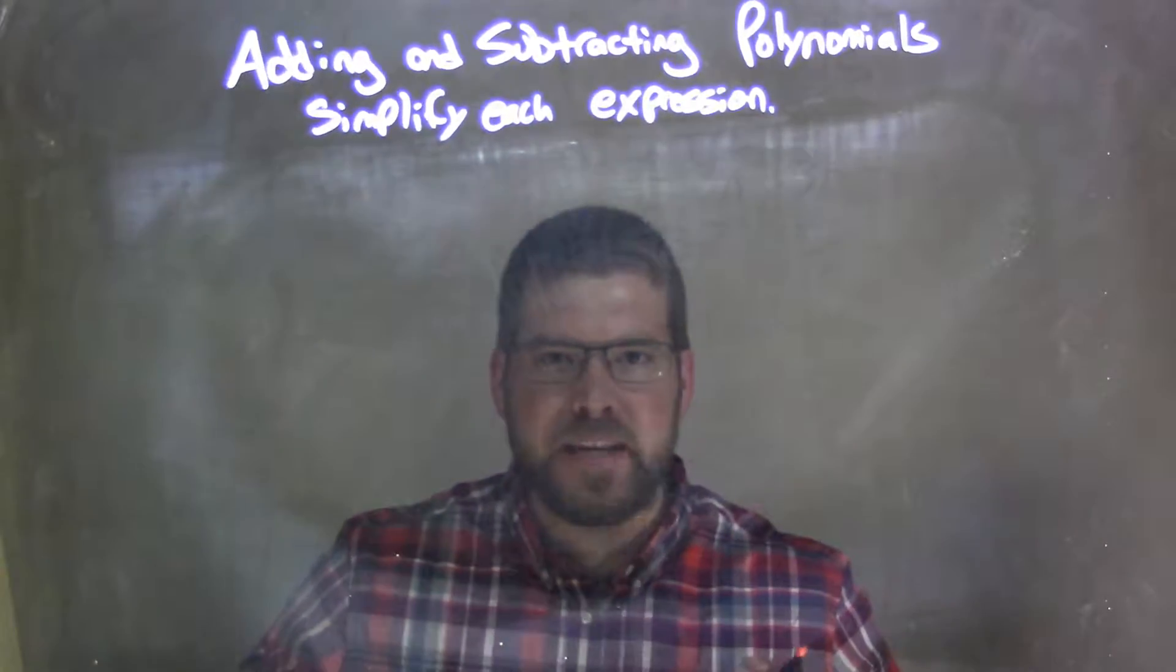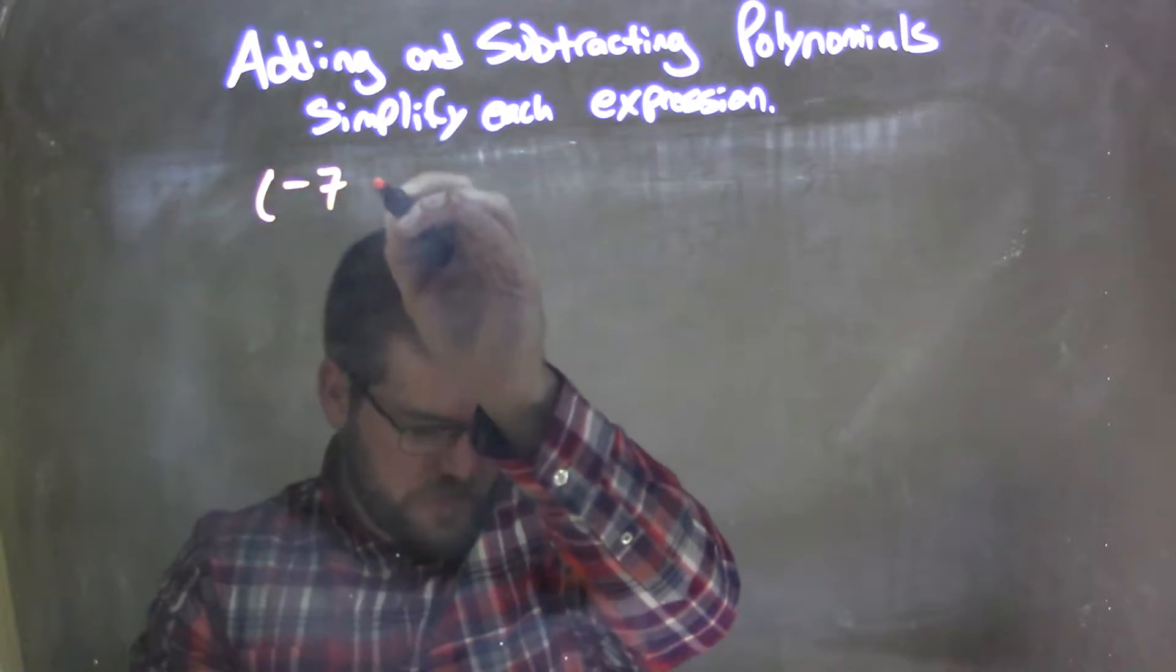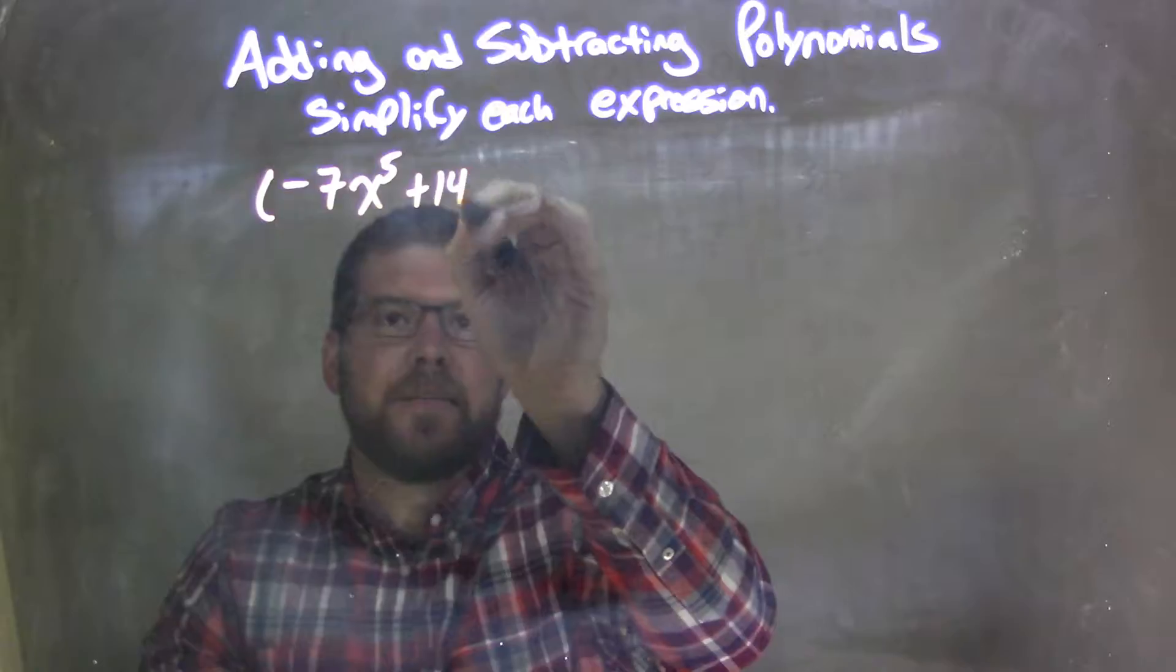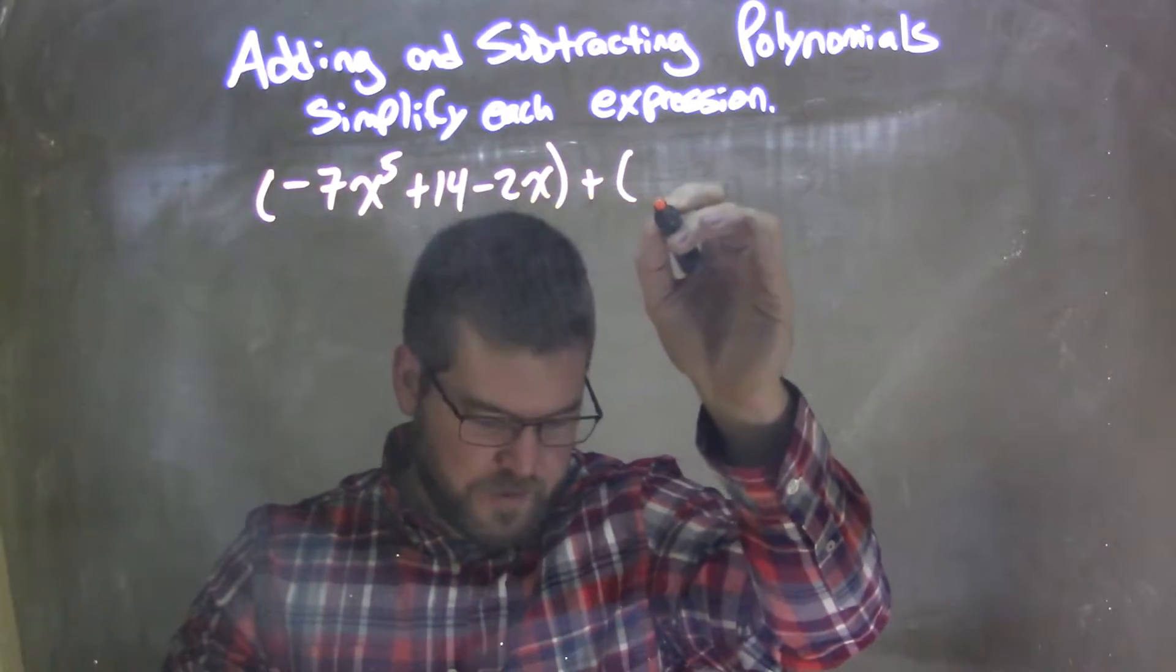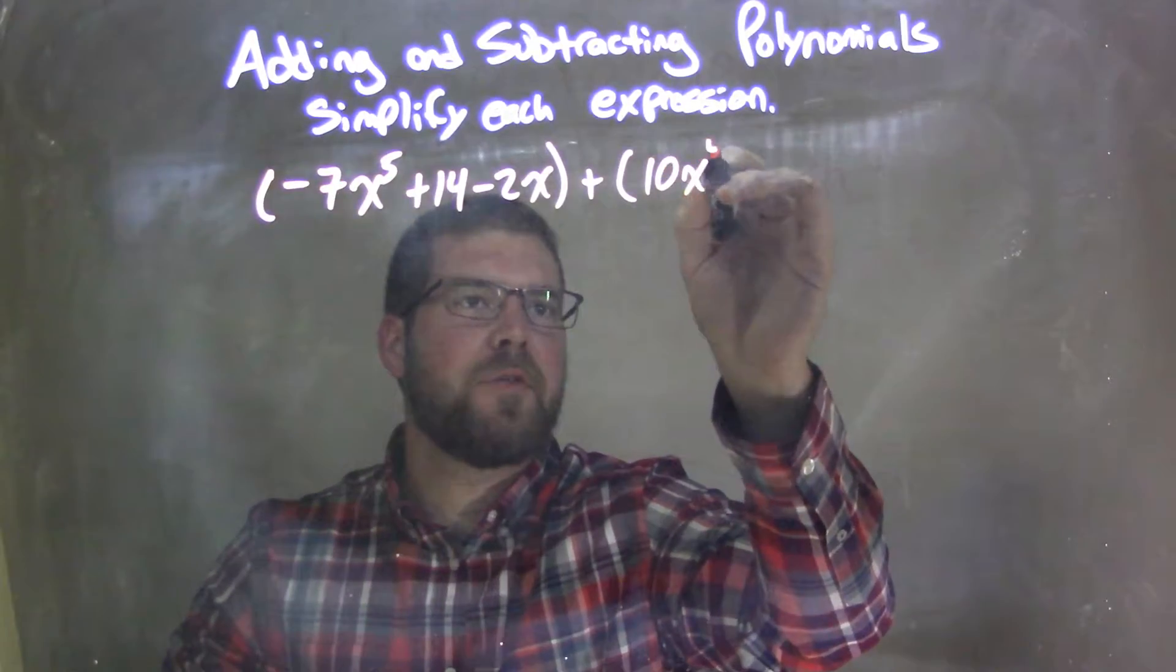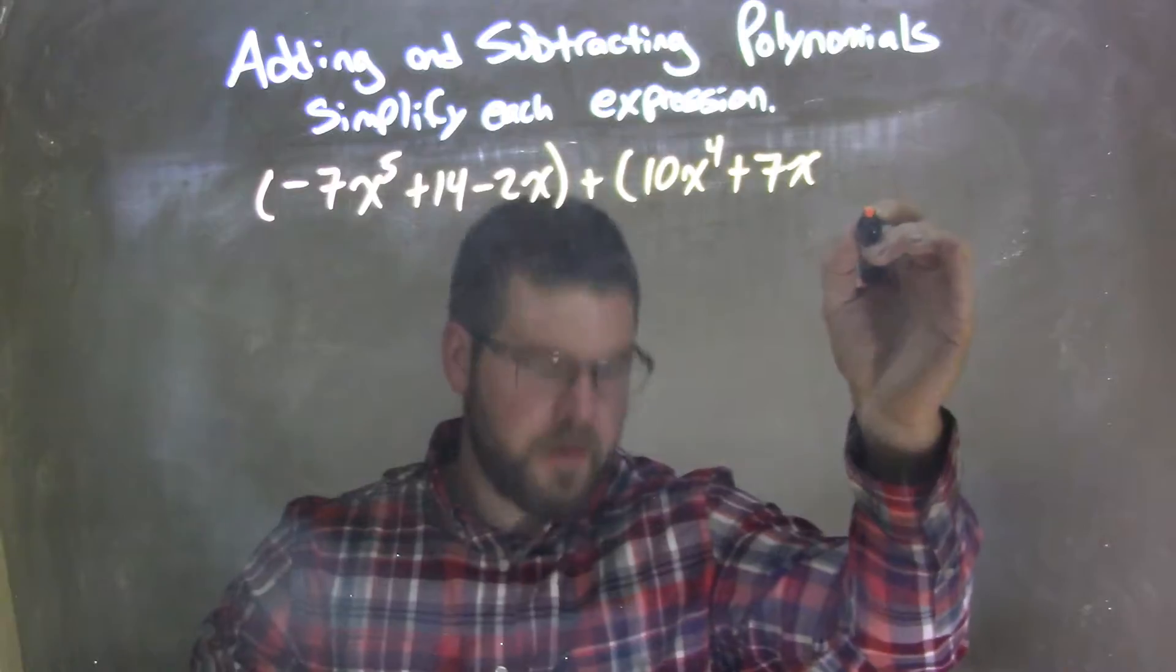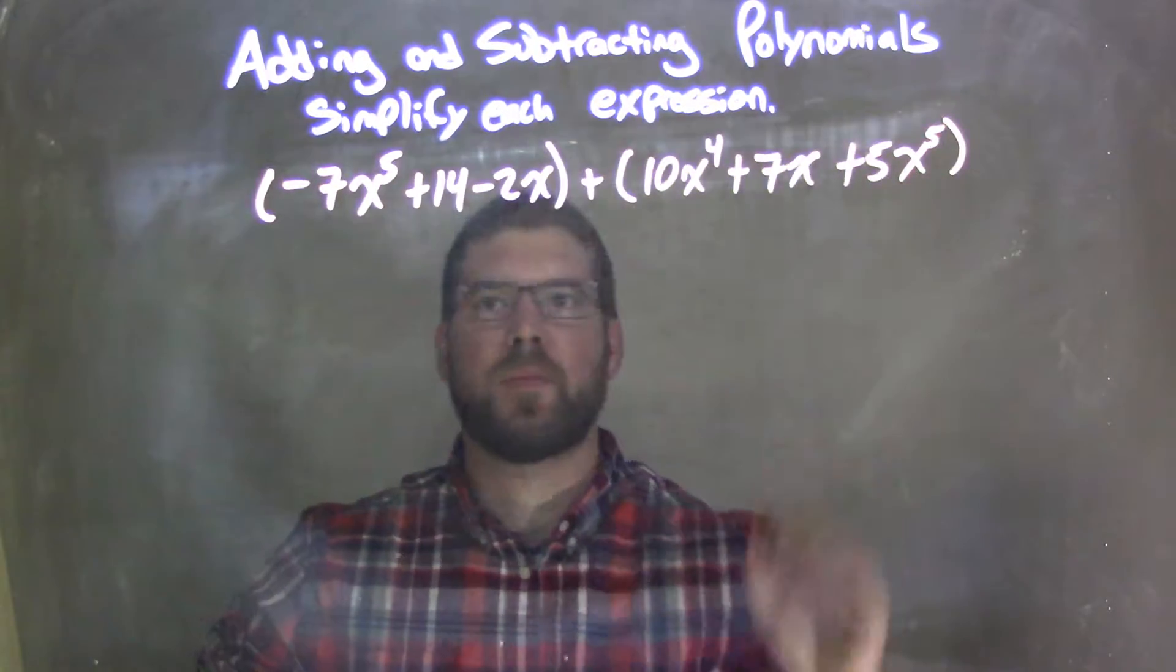So if I was given this polynomial: (-7x^5 + 14 - 2x) + (10x^4 + 7x + 5x^5).